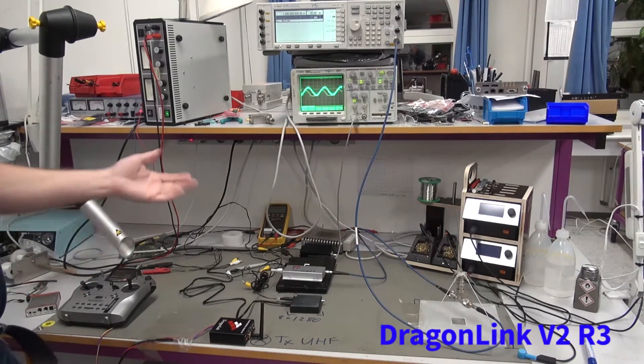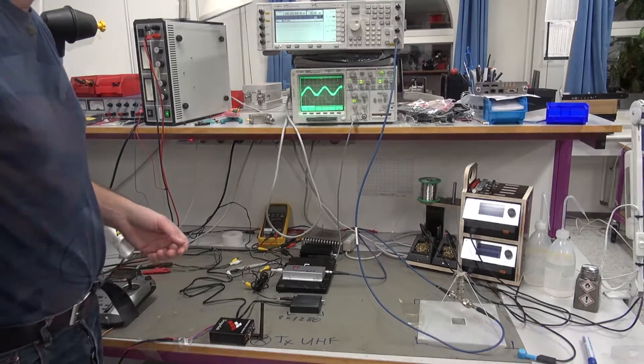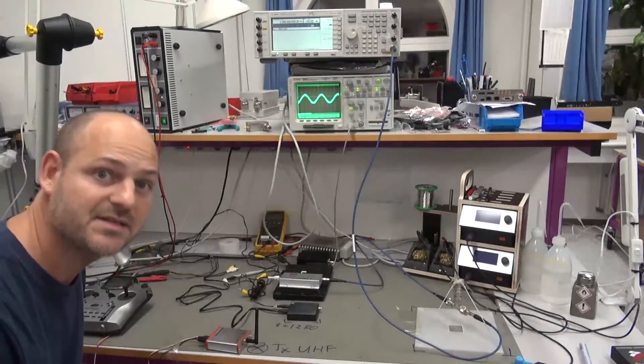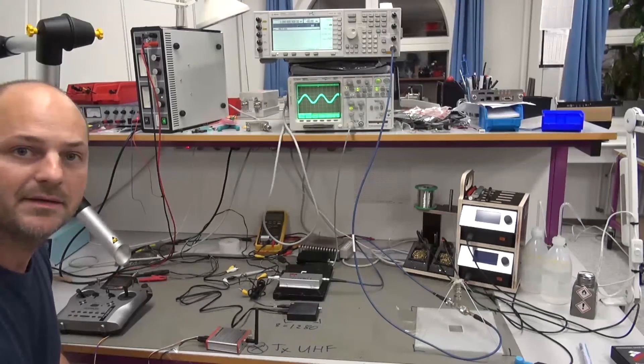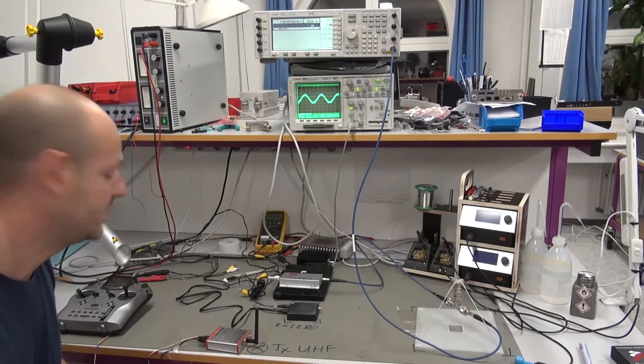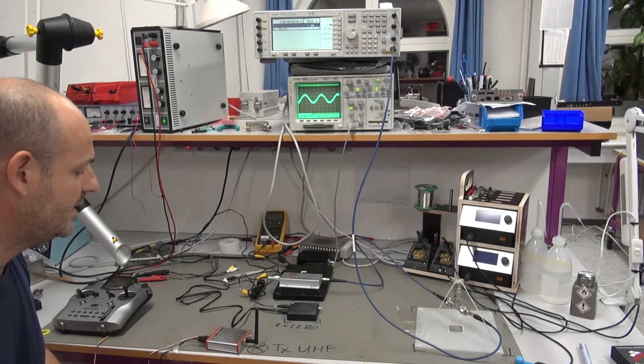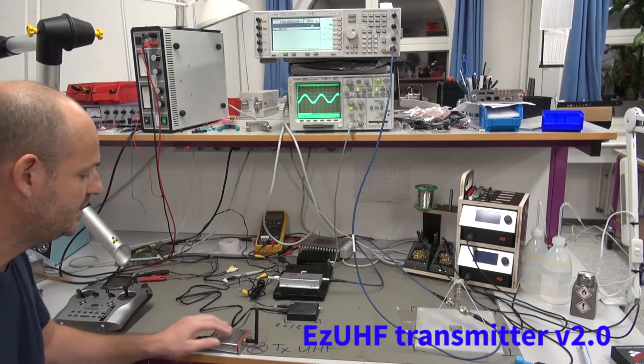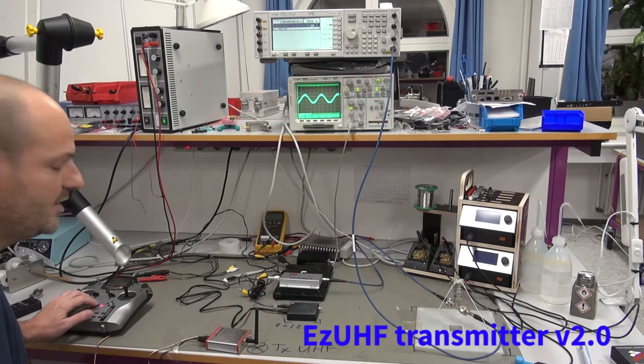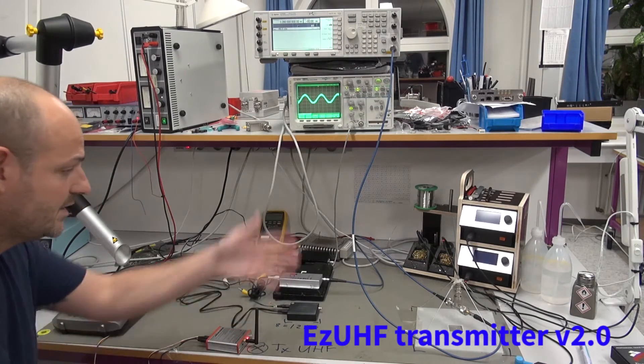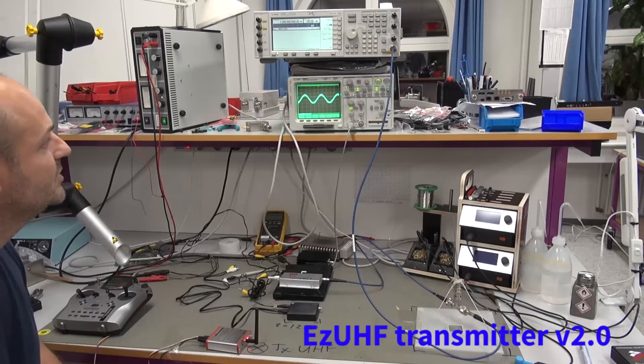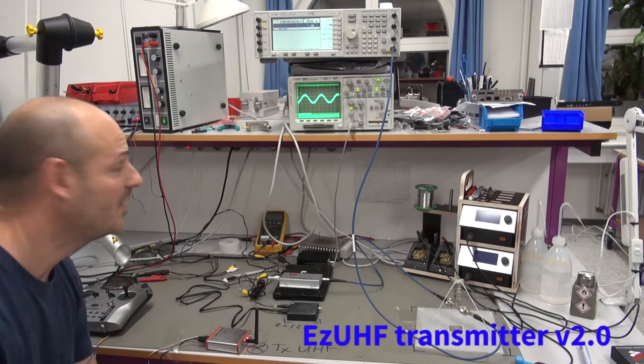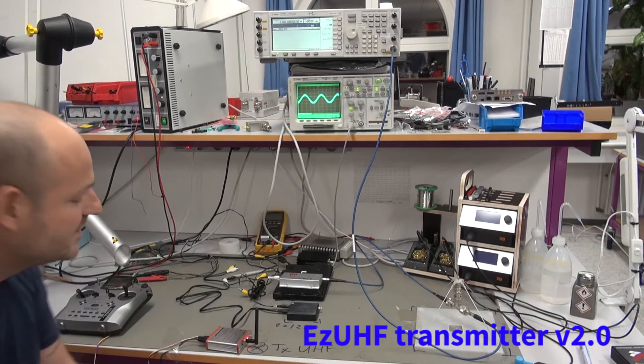Under exactly the same circumstances, now we're going to do the last harmonic test and a little bit of a resume to explain exactly what we're seeing here. Now we take the absolutely worst case of harmonics, the EzUHF, and if we power this up under exactly the same circumstances, you see there is also no jamming on this video frequency.